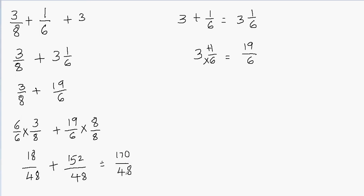Now we can reduce this fraction. There are two different ways to write the answer — either as a mixed fraction or as an improper fraction. If we write this as a fraction, we need to reduce it to its lowest term. So I'm going to write 170 divided by 48. I need to find a number divisible by both 170 and 48. I know that they're both divisible by 2.